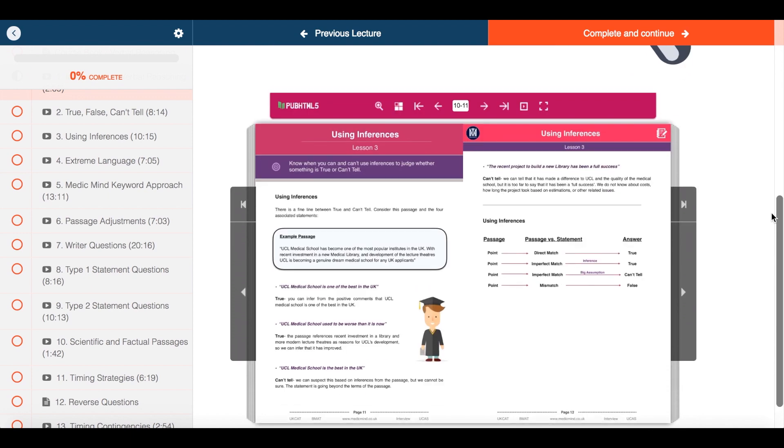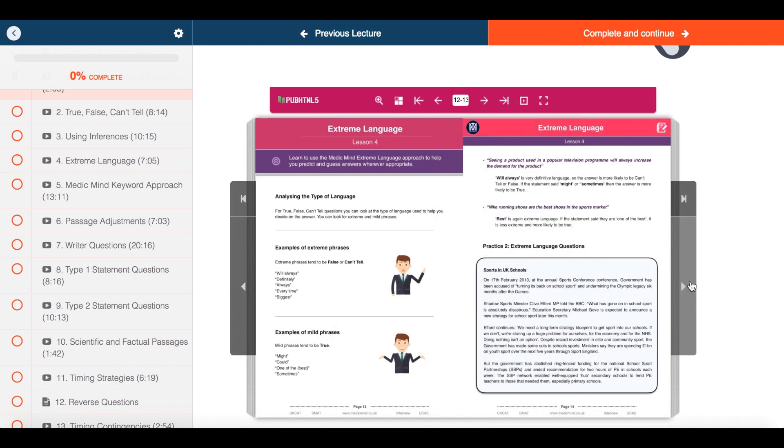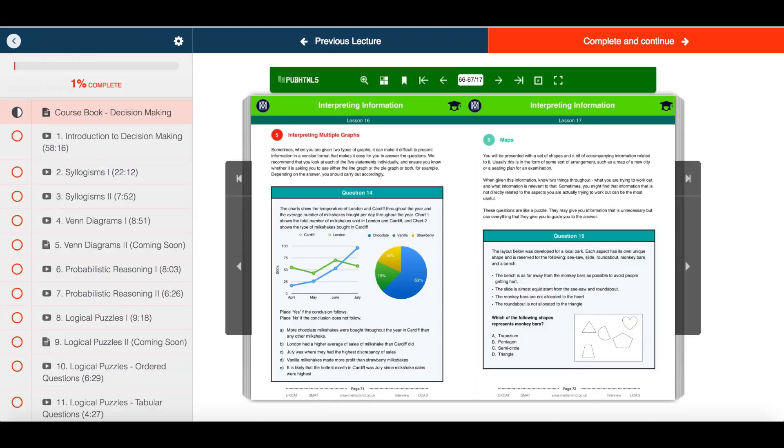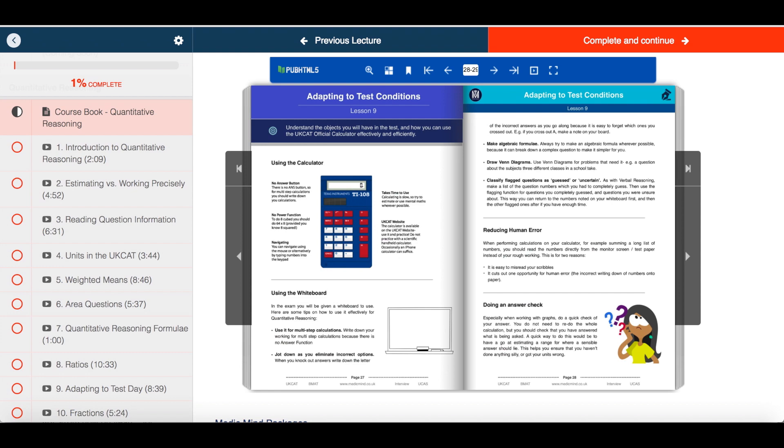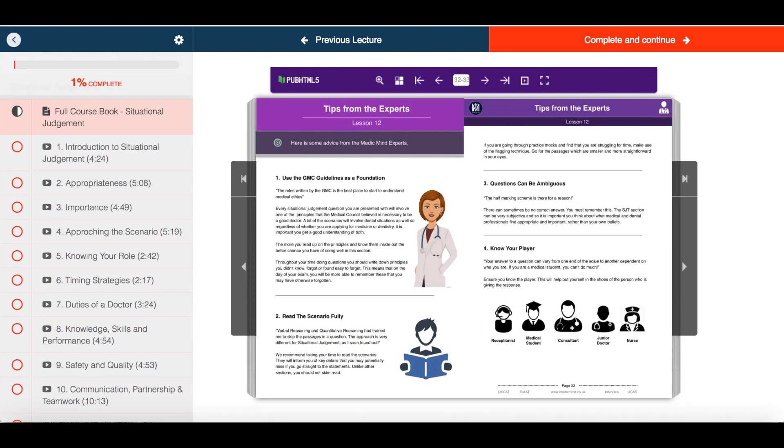And with each tutorial, you can read along using our five UKCAT ebooks covering 500 pages of theory and questions to guide you every step of the way.